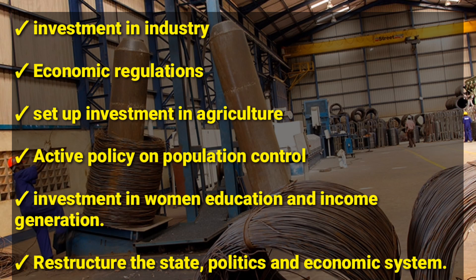Another area is an active policy on population control. Uganda's population growth rate has been rapid. As a result, GDP growth per capita has been lower than GDP growth. For Uganda to realize a population dividend, the population growth should be reduced and total employment increased. They should control the population by encouraging family planning and other measures, which in turn will increase the GDP of the country.